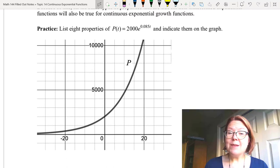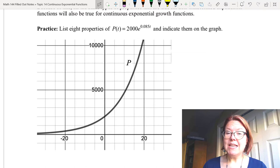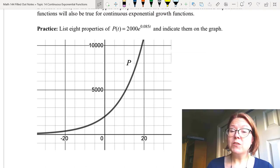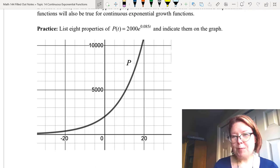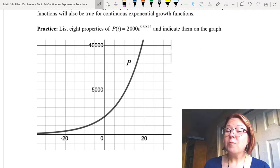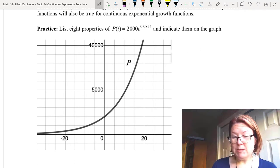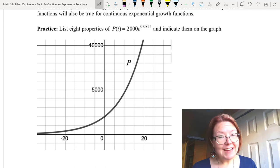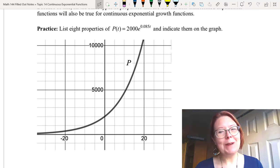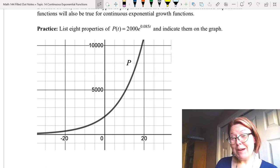I want you to list eight properties of capital P of t equals 2000e raised to the 0.085t power and indicate important properties that you find on the graph. I've placed a graph of P on this page but I don't want to describe it yet because I'd be giving away properties of the graph. I can actually write eight properties of this function without ever looking at this graph. See if you can do it with the graph as a hint. Pause the video come back when you're finished.